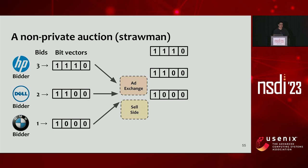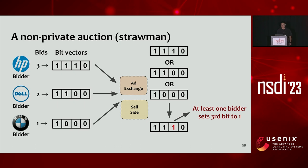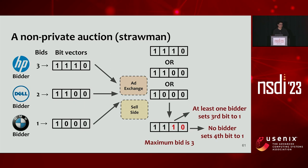All bid vectors are submitted to the two auction servers, which run a bitwise OR operation over each entry. For the first entry, the OR over three bits of value 1 gives 1. After computing all entries, the result vector is [1, 1, 1, 0]. The third entry being 1 indicates at least one bidder set it to 1, meaning the maximum bid is at least 3. The fourth entry being 0 means no bidder set it to 1, so the maximum bid is less than 4. Combining these, the maximum bid in the auction is 3.